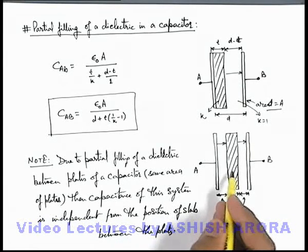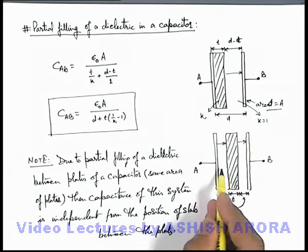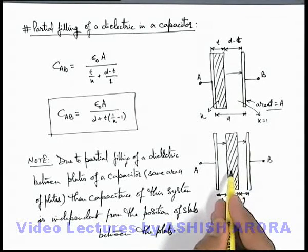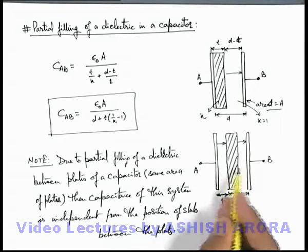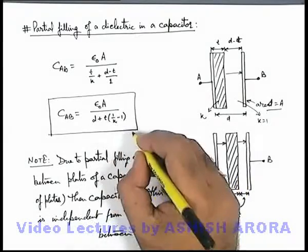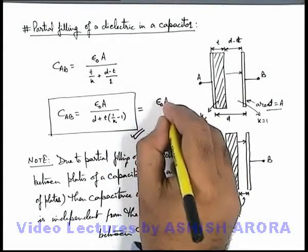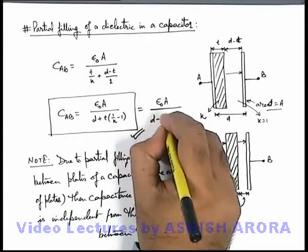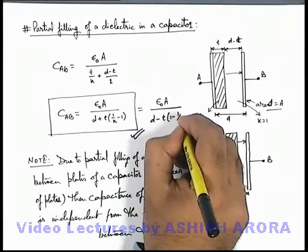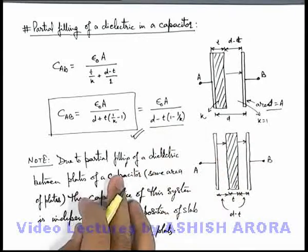That means wherever this slab you place, whether on left side or right side or anywhere in the middle of the two plates, we can say always the capacitance is given by this relation, or it can be written as epsilon not A by d minus t times 1 minus 1 by k. Either way we can calculate as one and same.